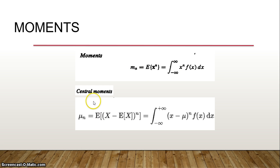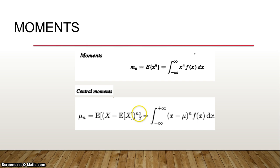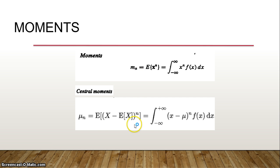Coming to central moments: you are comparing the moment with the mean. If you take x^n, it is just a moment. Whereas if you take (x minus m) whole power n, it is a central moment. Central moments show how the nth order moment varies with respect to the mean — that is the significance of general moments versus central moments.